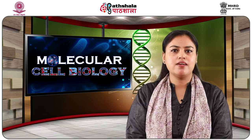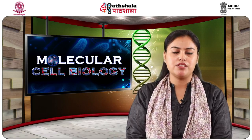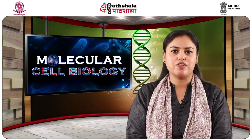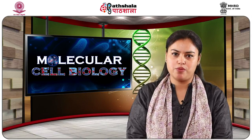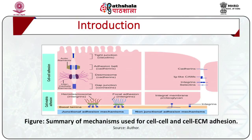Cells in complex metazoans are cooperatively assembled into tissues to perform dedicated functions with characteristic shapes and structure. The figure here presents a summary of mechanisms used for cell-cell and cell-ECM adhesions. The junctional mechanisms in epithelial cells involve specialized regions of contact, while the non-junctional mechanisms show no such obvious specialized structure.